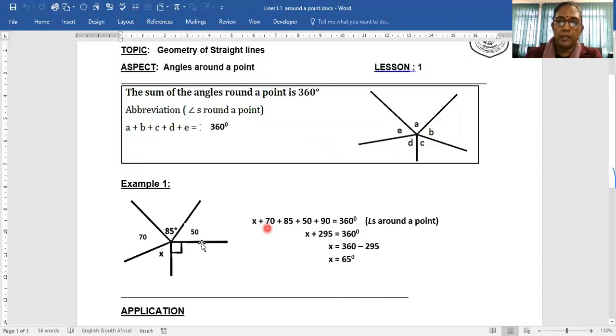So in our working, angle X plus 70 plus 85 plus 50 plus 90 is equal to 360 degrees, and reason angles around the point. Adding all the constant values, you get 295. To work out X, we move 295 constant value to your right hand side. So addition changes to subtraction. So you subtract 295, it gives you 65 degrees.